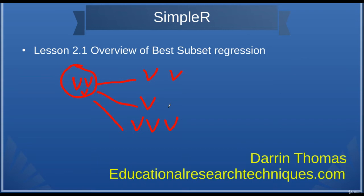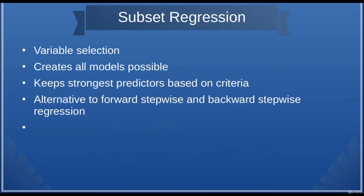So, when we're doing Best Subset Regression, essentially what we are doing is taking different combinations of variables and trying to find out which combination of variables is the best predictor or the best explainer of the dependent variable. With Best Subset Regression, you're trying to select the best combination of independent variables. It literally creates all models that are possible with the variables you have available, and it keeps the strongest variables in the model based on whatever criteria you pick. There are several different metrics available that we will talk about later.